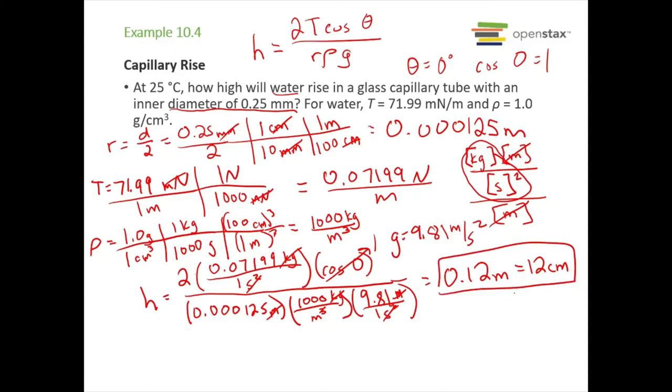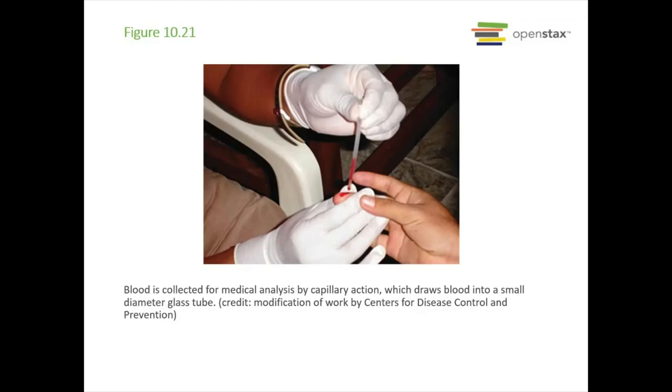Pretty big rise in the capillary tube, huh? And then an example of where capillary action comes into play is diabetes and blood sugar tests. Normally you don't have those big tubes, but they might do that for some tests. Generally, if you're using something like a blood sugar meter, these strips have a little tiny thing on them and you touch the blood drop to the strip and the blood is drawn into it by capillary action.